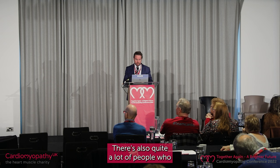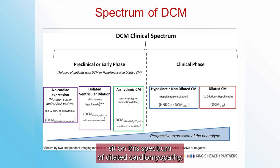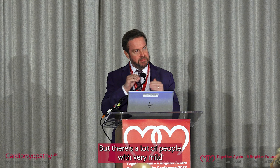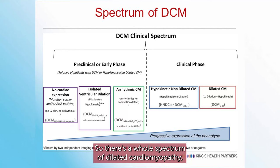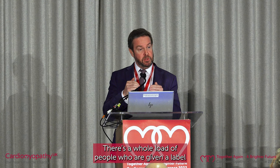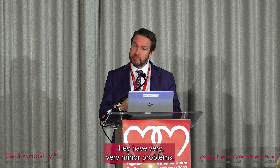There are quite a lot of people who sit on this spectrum of dilated cardiomyopathy. Because if you Google dilated cardiomyopathy, you see really extreme cases. But there are a lot of people with very mild symptoms, a just slightly enlarged heart, a just slightly weak heart. So there's a whole spectrum. Particularly now, our imaging is better — everyone gets an MRI — and there's a whole load of people given a label of dilated cardiomyopathy where actually they have very minor problems. So just be careful of that label sometimes.